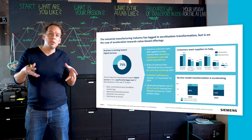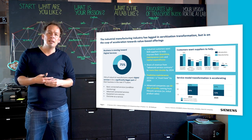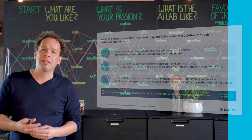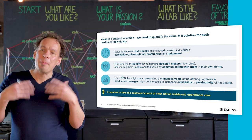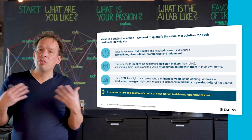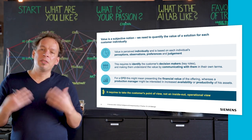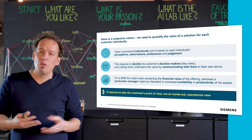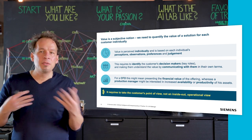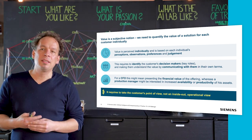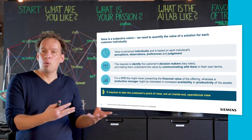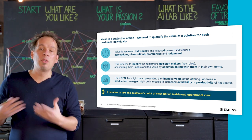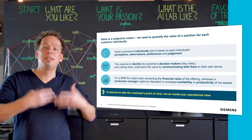In this session we want to focus specifically on what it actually means to shape value in the age of AI. Value is obviously a subjective notion. We need to somehow quantify it based on an individual customer, because value is perceived at the individual level — it's an observation, a preference, a judgment. Value is identified differently by different personas, key roles, and decision makers. Like a CFO quantifies value tremendously differently than a product manager, who may look rather at availability or productivity of features.